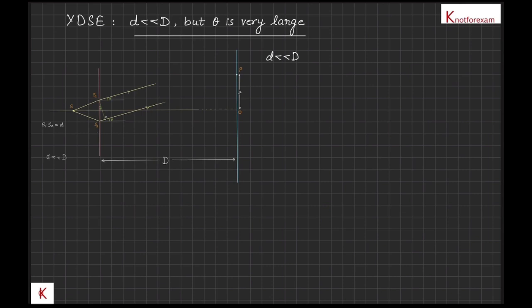Let's take a look at the given figure. For d very very less than D, wave 1 and wave 2 will be parallel. But since theta is very large, sine theta cannot be equal to tan theta cannot be equal to theta.